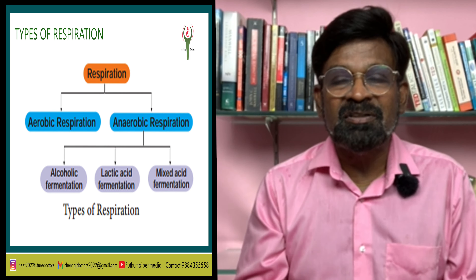Cellular respiration occurs in all living cells and proceeds with the help of enzymes. The first step of respiration is glycolysis. After glycolysis, pyruvic acid may enter the Krebs cycle, which is aerobic respiration requiring oxygen, or it may undergo fermentation, which is anaerobic respiration not requiring oxygen.